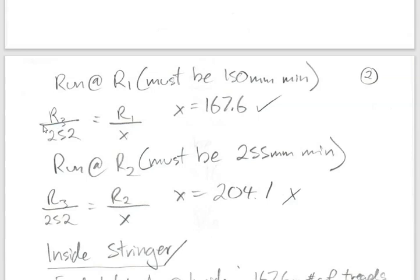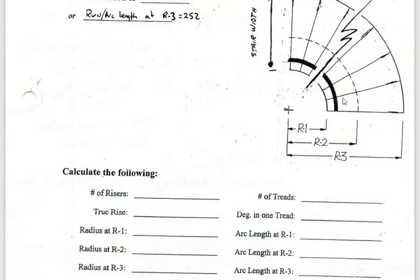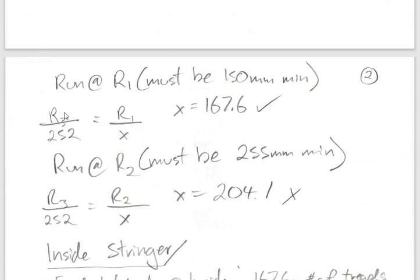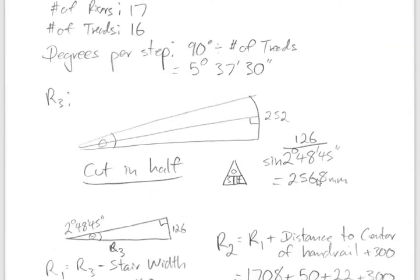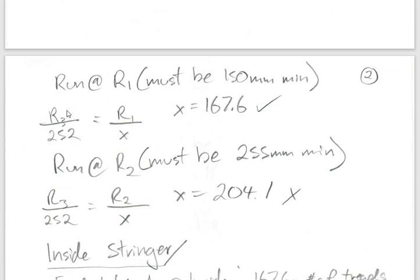Visualize the big triangle out to R3: we use R3 = 2568 and arc = 252, then proportion against the smaller triangle at R1 using R1 = 1708. The ratio and proportion gives us: (252 × 1708) ÷ 2568 = 167.6mm. We are above the 150mm code minimum, so we're okay there.